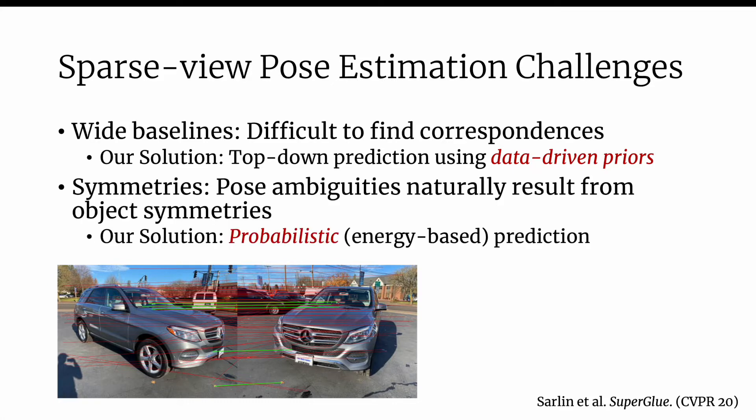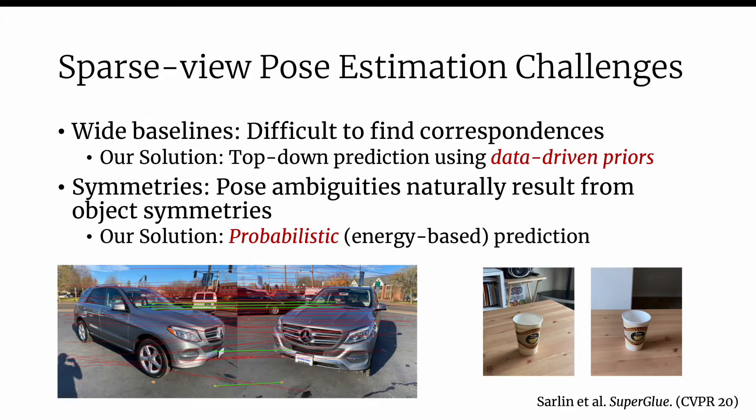A second challenge is that object symmetries often lead to pose ambiguities that are difficult to optimize out of. For example, these two sides of this cup look almost indistinguishable.